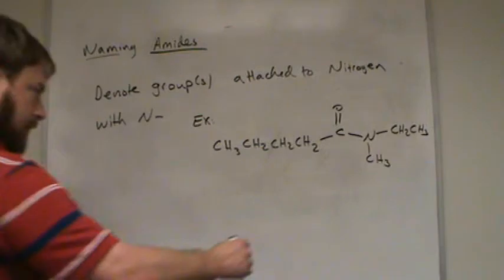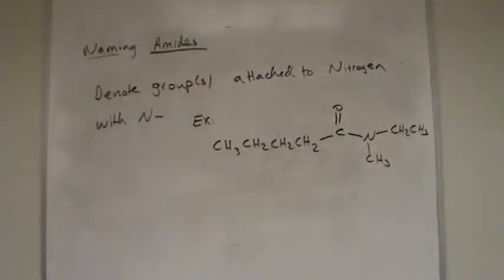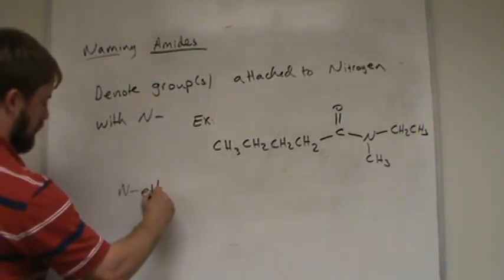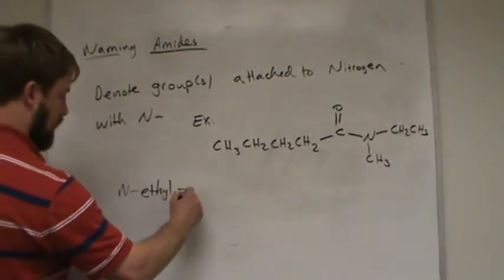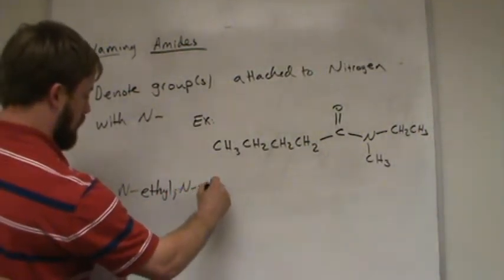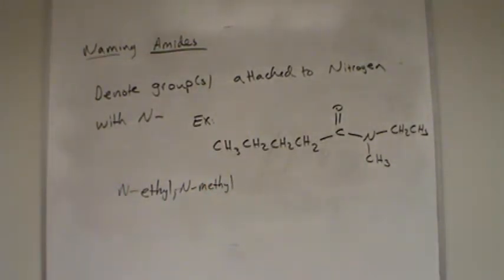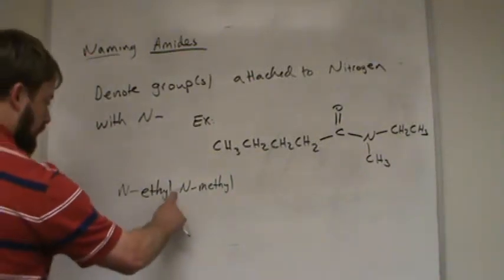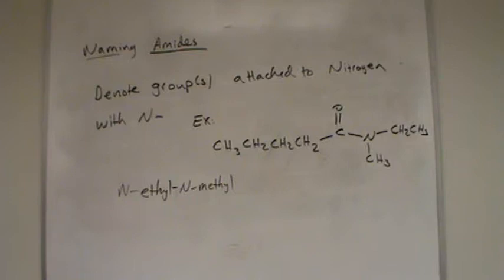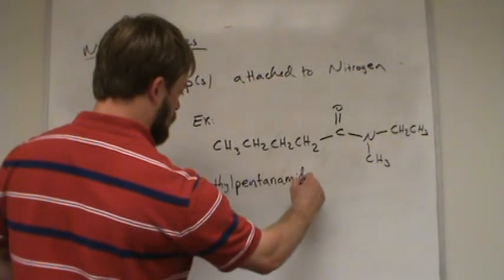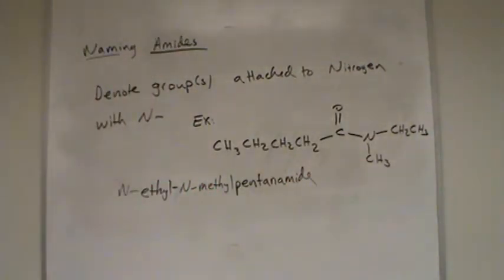But this nitrogen has a methyl group and an ethyl group attached to it. We need to indicate that in our name at the very beginning of the name. So ethyl comes before methyl alphabetically. So it'll be N-ethyl, N-methyl pentanamide. I think we need a comma there. Let's do a dash. N-ethyl-N-methyl-pentanamide.